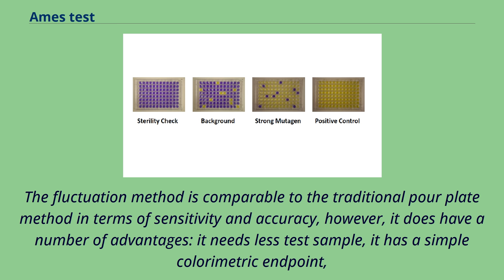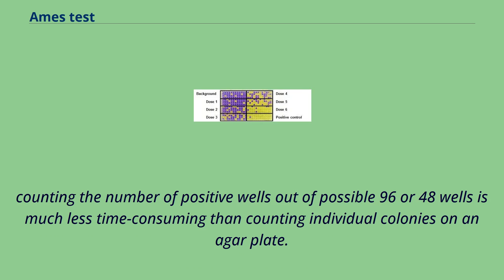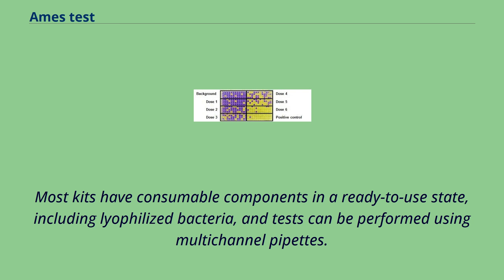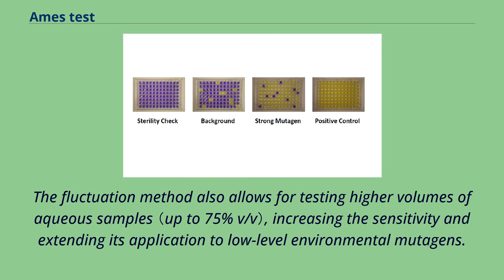The fluctuation method is comparable to the traditional pour plate method in terms of sensitivity and accuracy, however it does have a number of advantages: it needs less test sample, it has a simple colorimetric endpoint, and counting the number of positive wells out of a possible 96 or 48 wells is much less time consuming than counting individual colonies on an agar plate. Several commercial kits are available, with consumable components in a ready-to-use state including lyophilized bacteria, and tests can be performed using multi-channel pipettes. The fluctuation method also allows for testing higher volumes of aqueous samples, increasing the sensitivity and extending its application to low-level environmental mutagens.